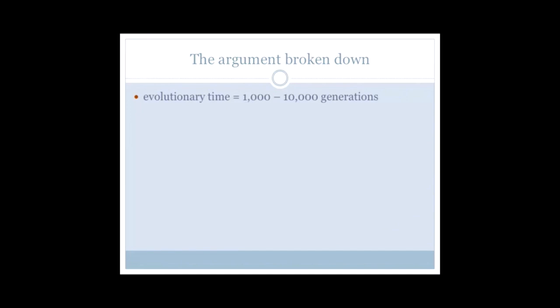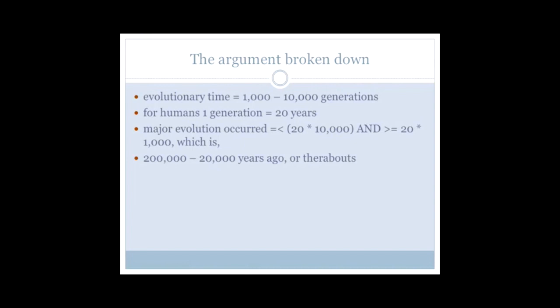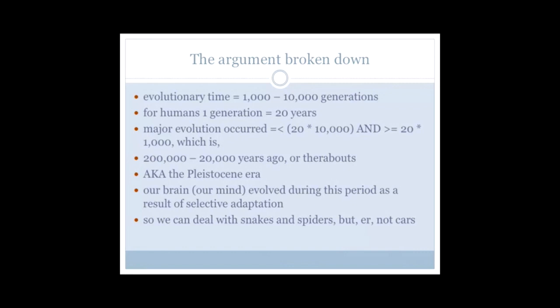If we take evolutionary time, that is between 1,000 and 10,000 generations, whereas for humans one generation is 20 years. Major evolution occurred between 20 times 100,000 and 20 times 1,000, which is 200,000 to 20,000 years ago or thereabouts. In other words, the Pleistocene era. Our brain, our mind, because they collapsed the two into each other, evolved during this period as a result of selective adaptation. So we're afraid of snakes, we can deal with snakes and spiders, we can judge their danger, but not cars, because we haven't had time to adapt to them. I don't know how well this stands up really as a theory. I think that we probably need to look at other areas of psychology. People like going fast. We always like going fast. As fast as we can.